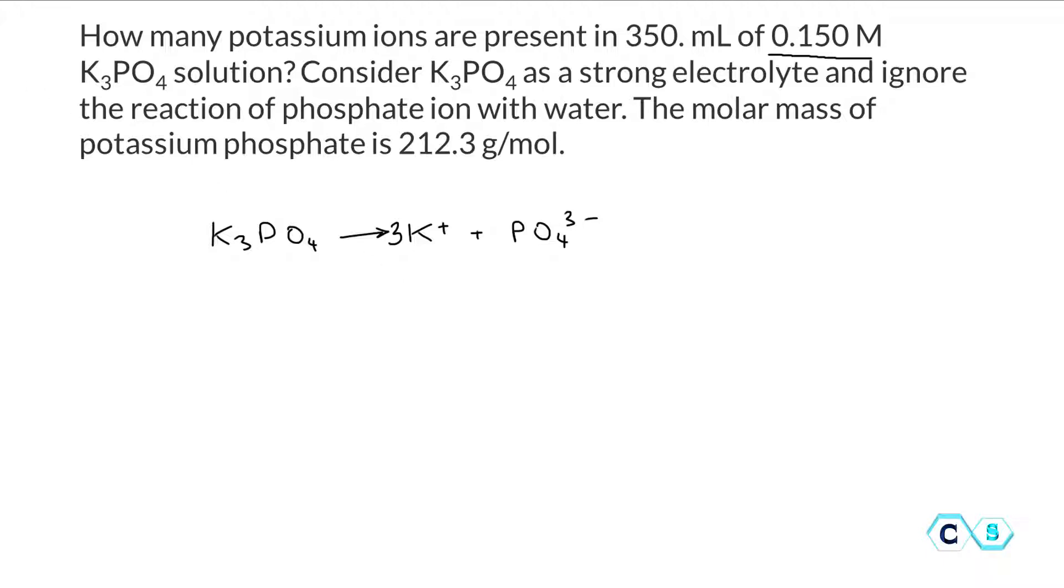Now that was the first step. What we want to do now is find the number of moles of potassium phosphate. The number of moles for potassium phosphate equals the concentration of potassium phosphate multiplied by the volume of the solution. We know that molarity equals moles over volume, so to find the moles we multiply concentration and volume.